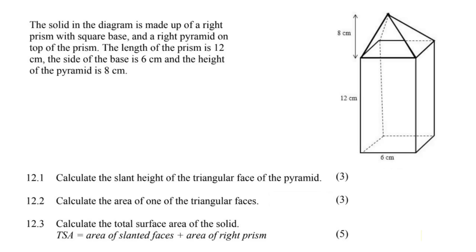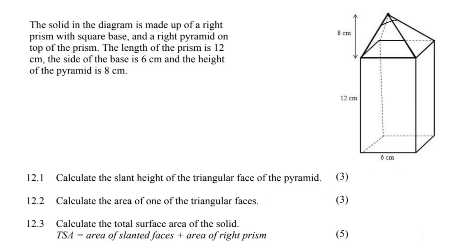The solid in the diagram is made up of a right prism with a square base and a right pyramid on top of the prism. The length of the prism is 12, and the side of the base is 6. So we've got a rectangular box and then we've got a pyramid.